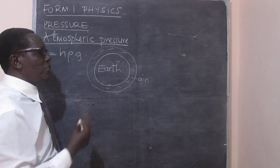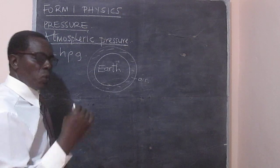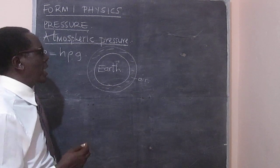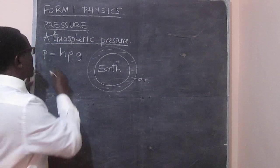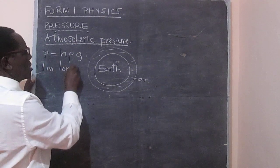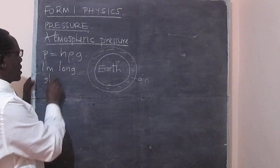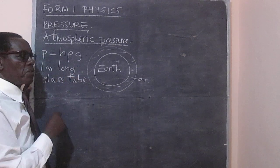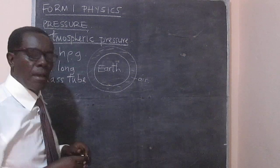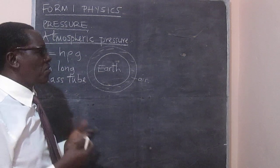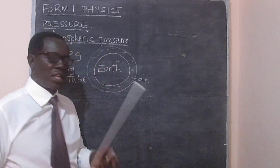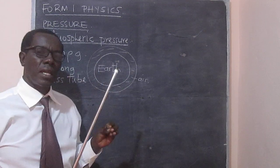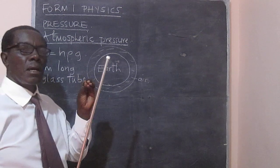In our lesson today, we want to see how we can determine in the lab the atmospheric pressure. We require, first of all, a 1 meter long hard glass tube. This tube is filled with mercury, and we ensure that there are no bubbles. This can be done in the laboratory with a lot of care because mercury is a poisonous substance.